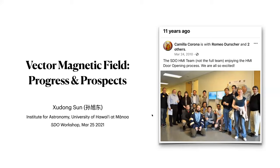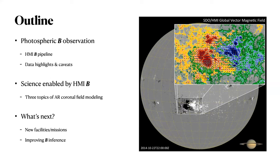It is a pretty broad topic, so what I'm going to do is break it down into three small parts. In the first part, I'd like to introduce the HMI instrument, especially the Vector Magnetic Field Pipeline, and some of the highlights and caveats of the magnetic field measurement in general. Then I will talk about some of the unique science enabled by the HMI vector magnetic field measurements, focusing on modeling the active region coronal magnetic field using HMI as input. Last is the prospects part, covering upcoming new facilities and missions that will measure the vector magnetic field in the photosphere.